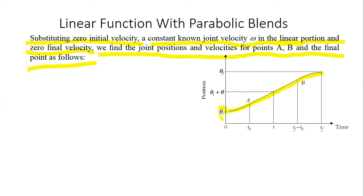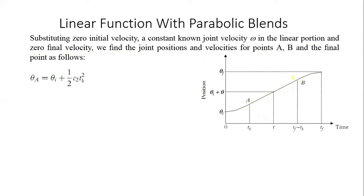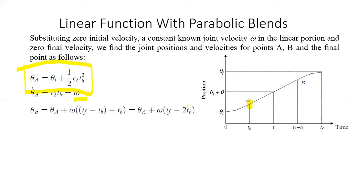We divide the trajectory into several segments. At the initial point, velocity is assumed zero; in the linear segment the velocity is assumed constant ω; and at the final position velocity is assumed zero. Using these boundary conditions we can find the joint positions at point A and point B. Position at point A is θ_a = θ_i + ½·c₂·t_b², and its derivative gives θ̇_a = c₂·t_b = ω, since ω is constant from point A to point B.